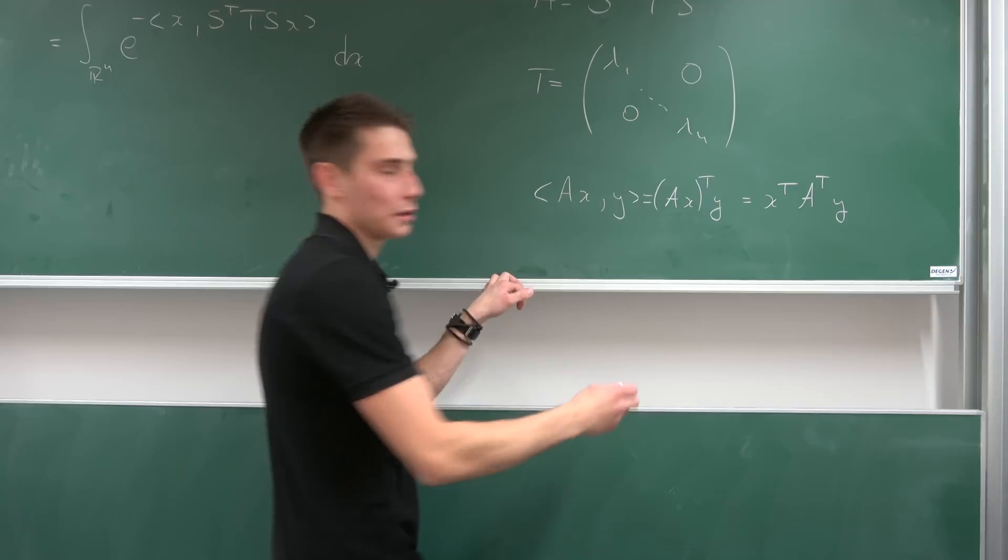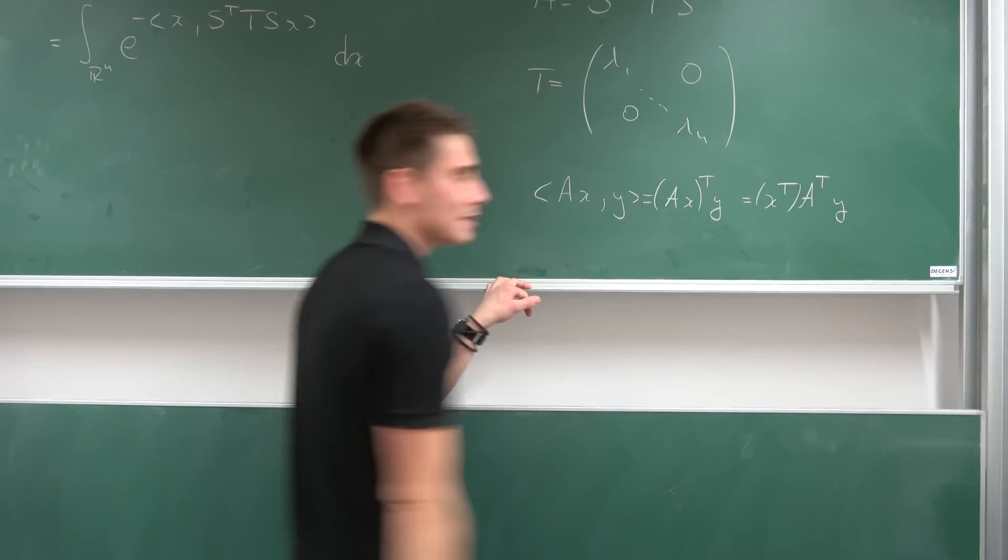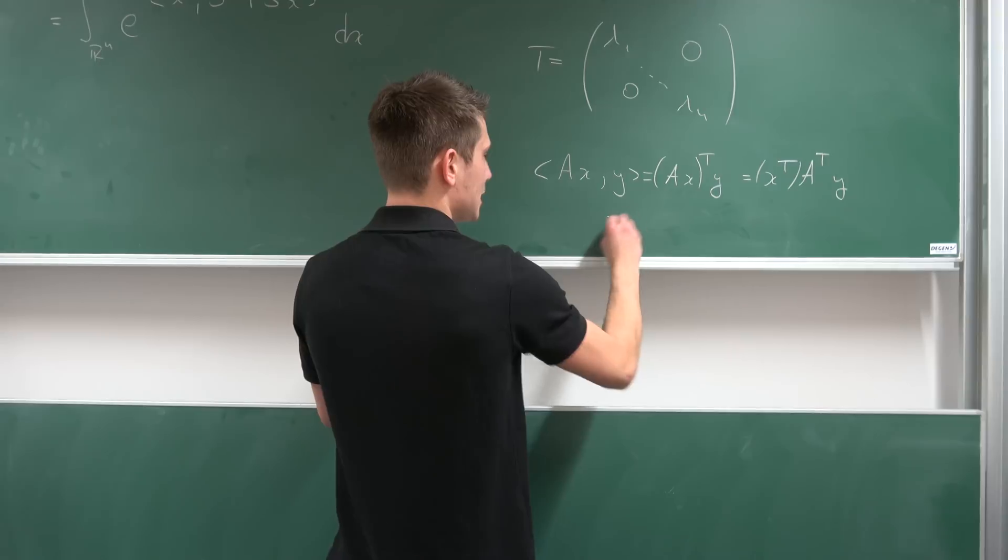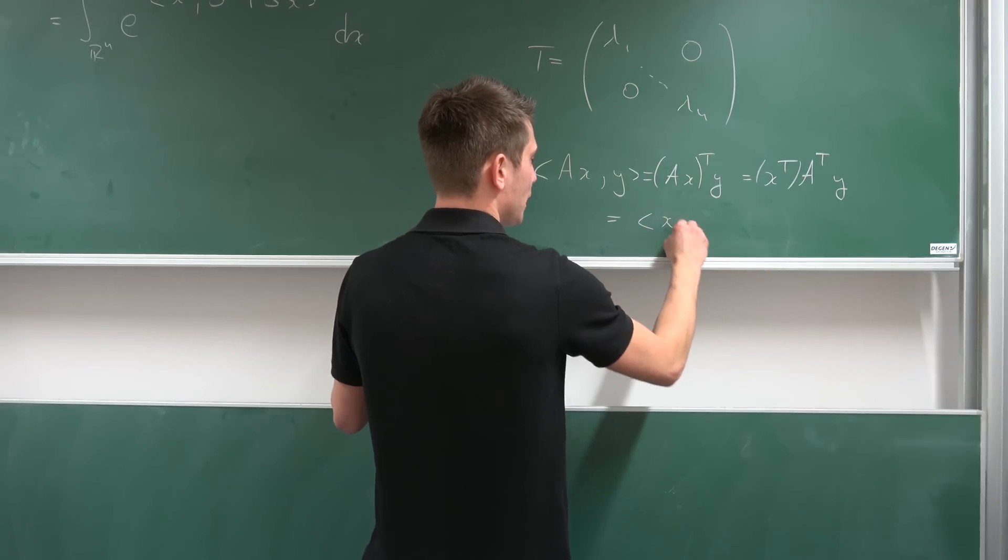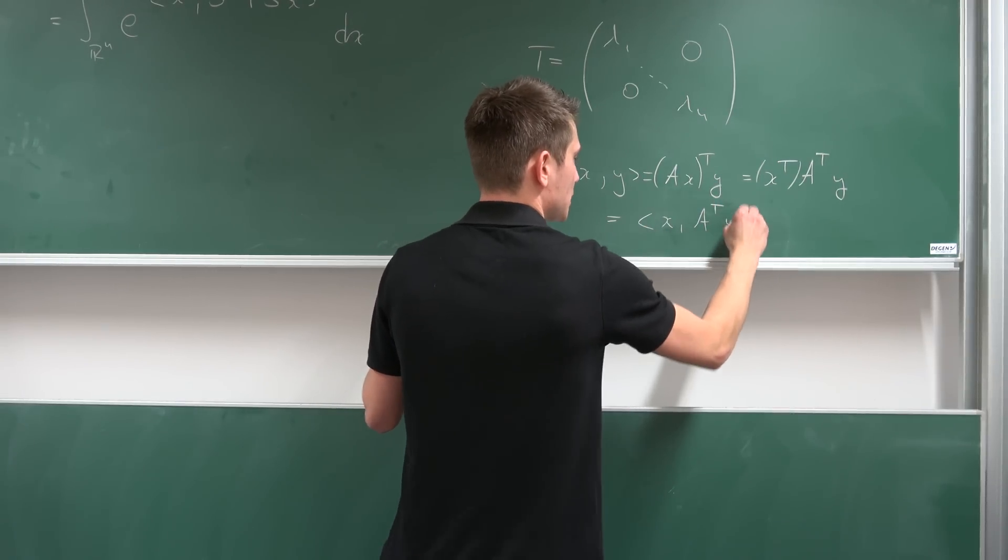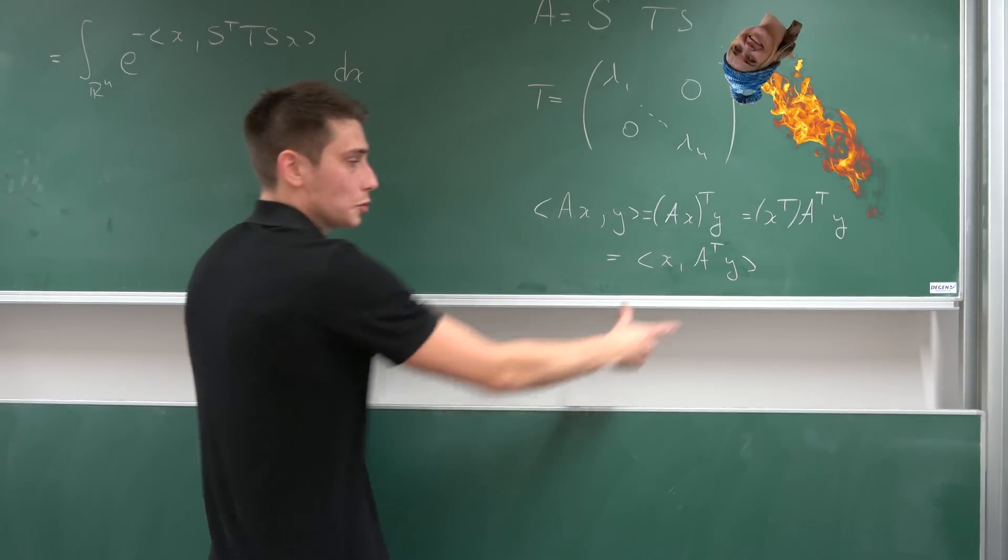Okay, you see? And, well, if we put this right here into parentheses, you can actually see that this right here is equal to, well, the inner product of x with a transposed times y. And this is actually what we are going to use.